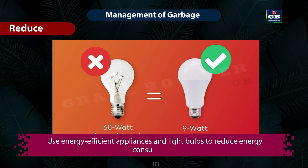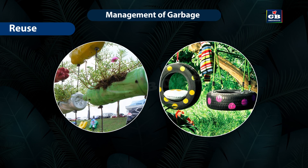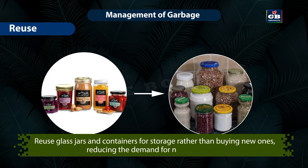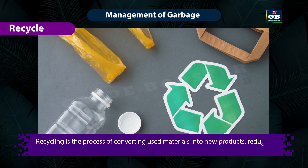Carry a reusable bag for shopping. Use energy-efficient appliances and light bulbs to reduce energy consumption. Reuse involves finding new uses for items to extend their lifespan and reduce the need for constant production of new goods — for example, reuse glass jars and containers for storage rather than buying new ones every time.